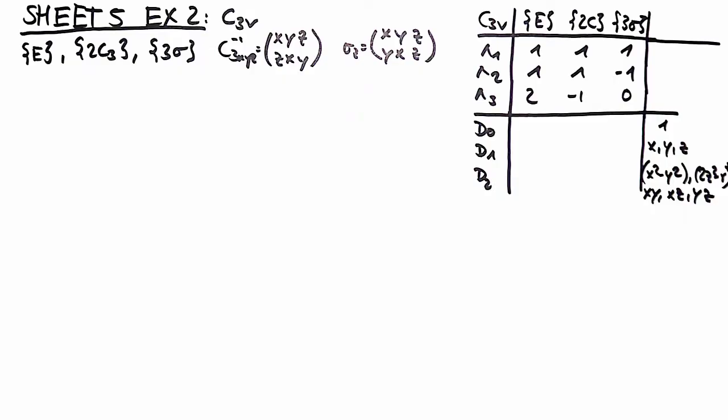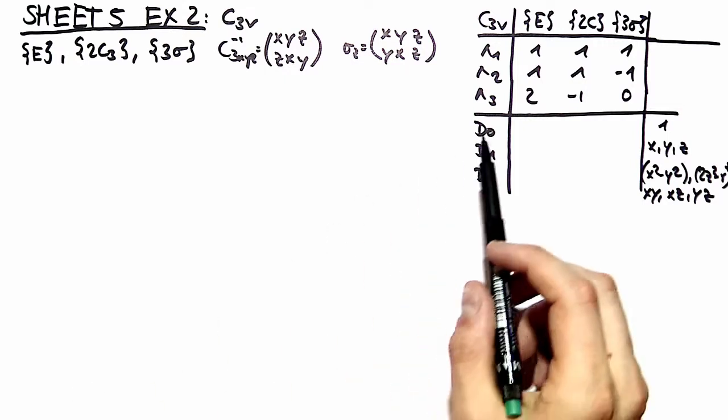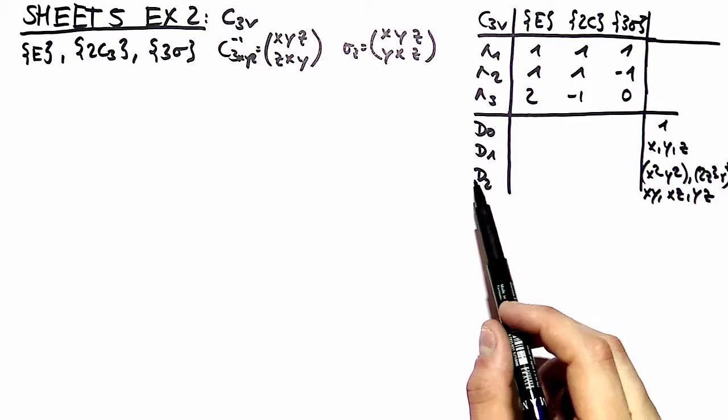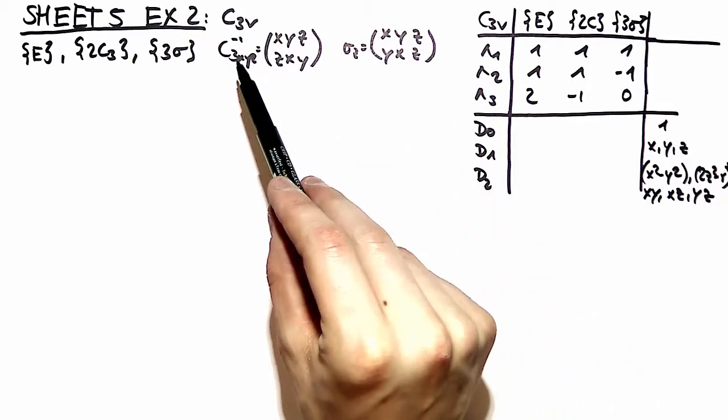Hello and welcome back. This is exercise number 2 of problem sheet number 5. Here we are investigating the representations of SO3, namely d0, d1 and d2 and how these representations decompose in the presence of C3v symmetry.